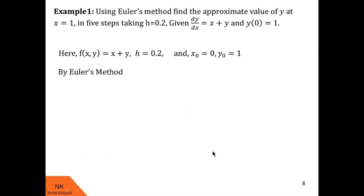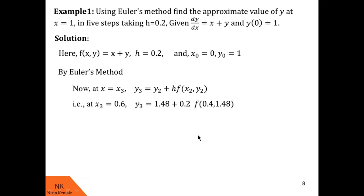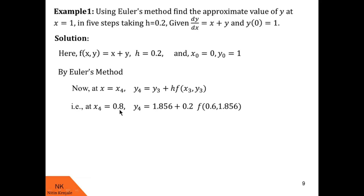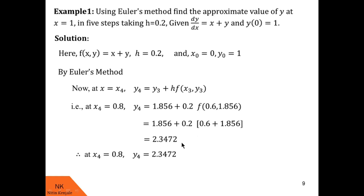Now we go for x3. By Euler's method, y3 = y2 + h·f(x2, y2). Substituting the values, we get y3 = 1.856. So at x3 = 0.6 we get y3 = 1.856. For y4 at x4: x4 = x3 + h = 0.6 + 0.2 = 0.8. By Euler's method, y4 = y3 + h·f(x3, y3). Substituting and simplifying using a calculator, we get y4 = 2.3472. So the value of the solution at x4 = 0.8 is 2.3472.